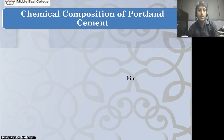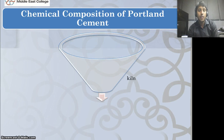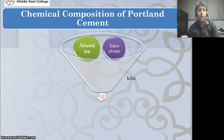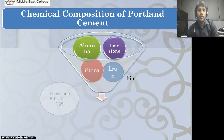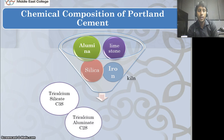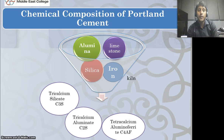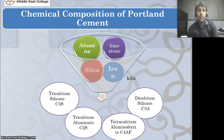Let me explain what happens in the kiln. Limestone, alumina, silica, and iron are added, and they produce: tri-calcium silicate, tri-calcium aluminate, tetra-calcium alumino ferrite, and di-calcium silicate as the resulting mixture.